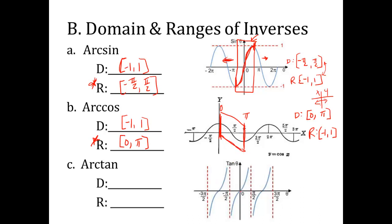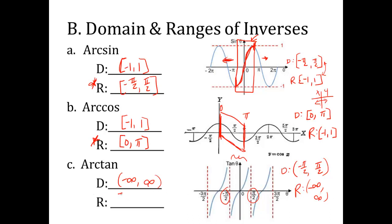For tangent, to pass the horizontal line test you take just one period — from negative pi over 2 to positive pi over 2. That's the domain where the inverse exists. The range of tangent is negative infinity to positive infinity. So for arc tangent, the domain is negative infinity to positive infinity, and the range is restricted to negative pi over 2 to pi over 2 (with parentheses, since it's undefined at those endpoints).